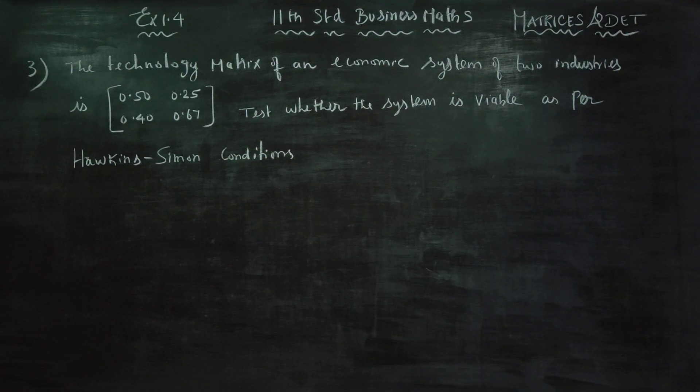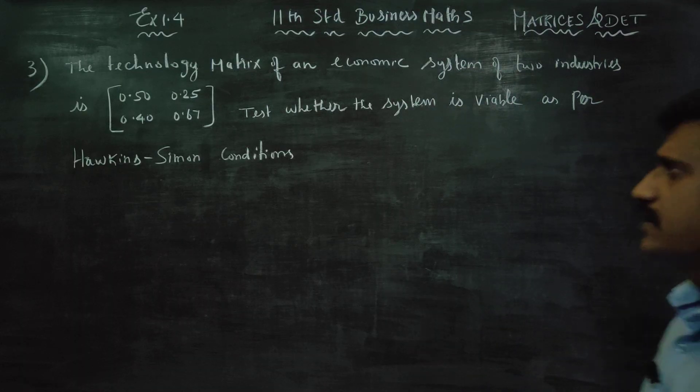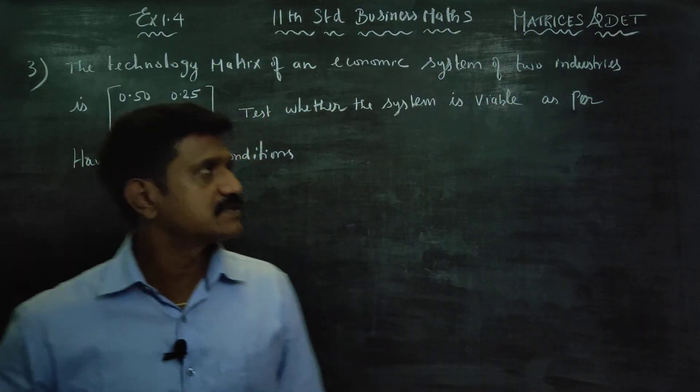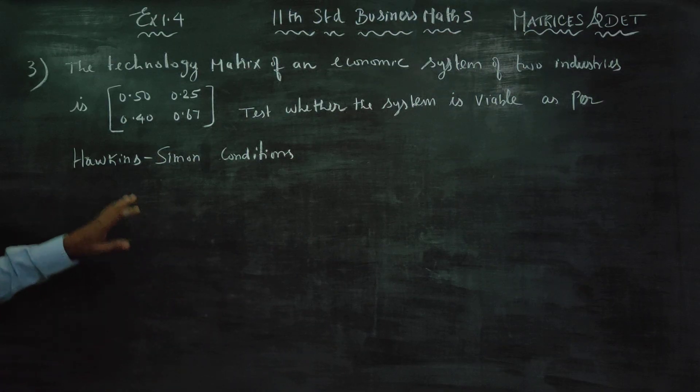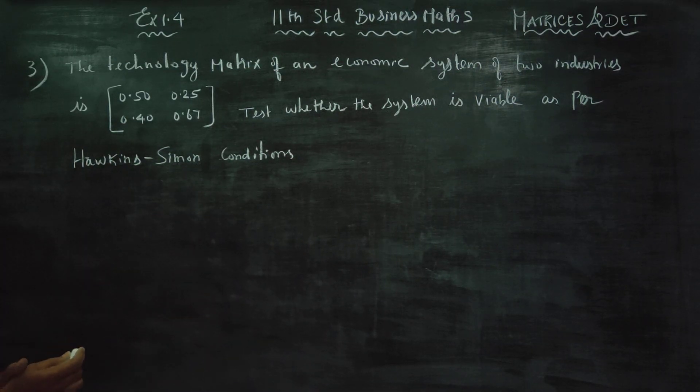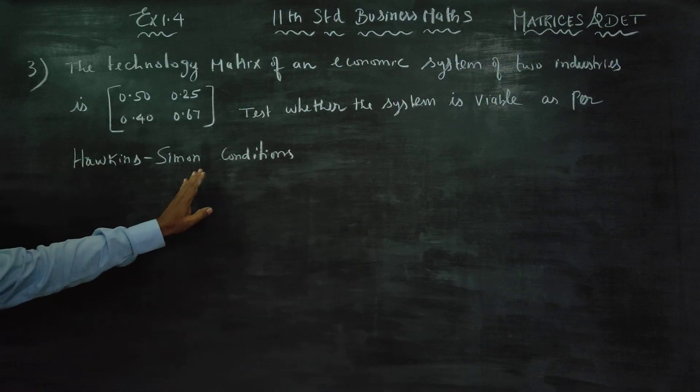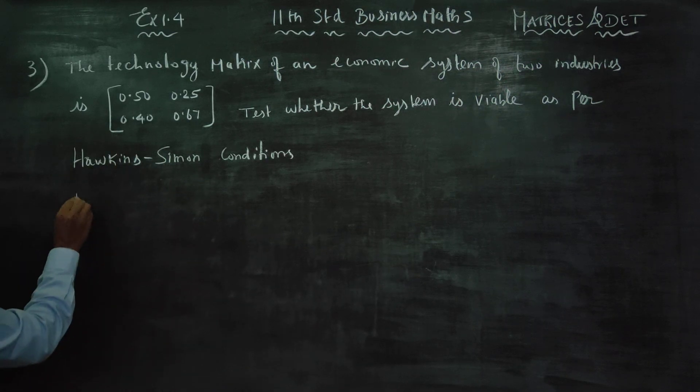Dear 11th standard business mathematics students, in exercise number 1.4, sum number 3, the technology matrix of an economic system is given. Test whether the system is viable as per Hawkins-Simon condition. First is the B matrix.